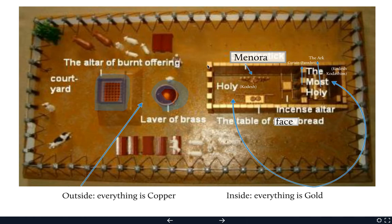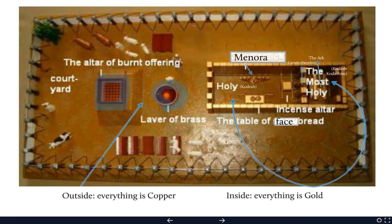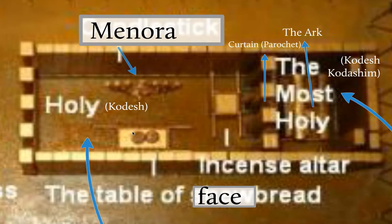Here's the inside of the Mishkan, divided into two sections: the Kodesh, and the Kodesh Kodeshim — the Holy, and the Holy of Holies. Inside the Kodesh you have three things: a table, which we'll look at more closely — facing inside, the table is on your right; a menorah on your left; and a golden altar right in the middle. Then you have a curtain, and on the other side of the curtain is the Ark of the Covenant.